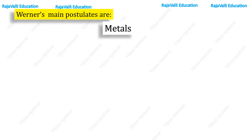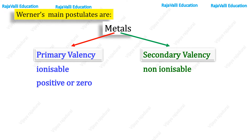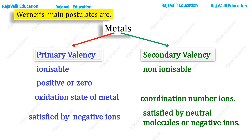Now we see the summarized results of Werner's postulates. Metals have two types of valency: primary valency and secondary valency. Primary valency is ionizable; secondary valency is non-ionizable. Primary valency is positive or zero, and is determined by the oxidation state of the metal. Secondary valency is determined by the coordination number. Primary valency is satisfied by negative ions; secondary valency is satisfied by neutral molecules or negative ions.